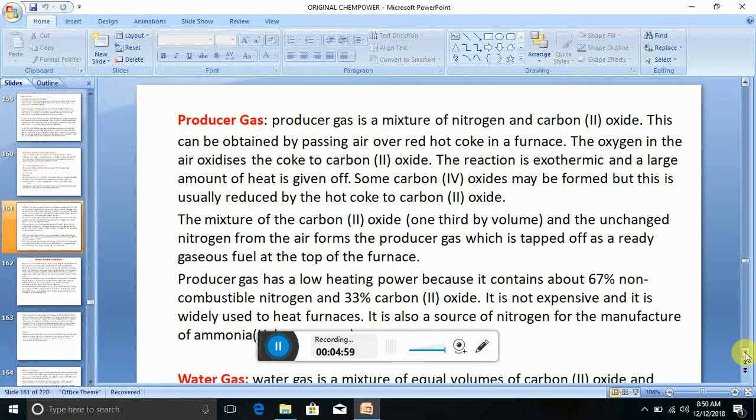Now let's look at these substances that could be got from destructive distillation of either coal or wood. First of all, let's look at producer gas. Producer gas is a mixture of nitrogen and carbon 2 oxide. This can be obtained by passing air over red hot coke in a furnace.